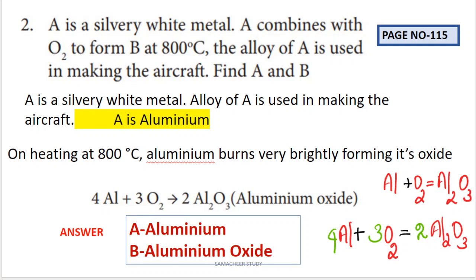Next question: A is a silvery white metal. A combines with O2 to form B at 800 degrees centigrade. The alloy of A is used in making aircraft. Find A and B. This is very simple question. First, two hints: A is a silvery white metal, and alloy of A is used in making aircraft. That is aluminum. So we identify A is aluminum.